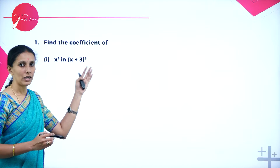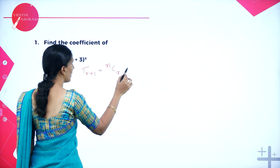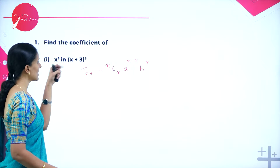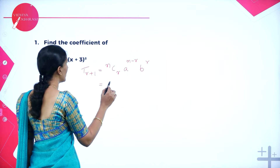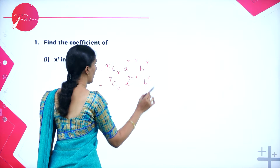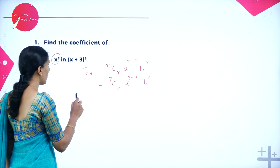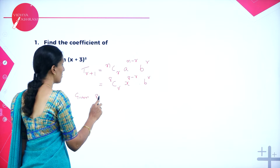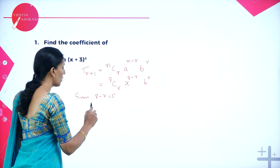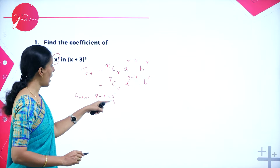This is an application of the binomial theorem — we can find the coefficients of a given power of a variable without expanding it, using only the general term formula. We write the general term: T(r+1) = nCr · a^(n-r) · b^r. Here n = 8, a = x, b = 3. So T(r+1) = 8Cr · x^(8-r) · 3^r. Since we need the coefficient of x^5, we equate 8 - r = 5, giving r = 3.